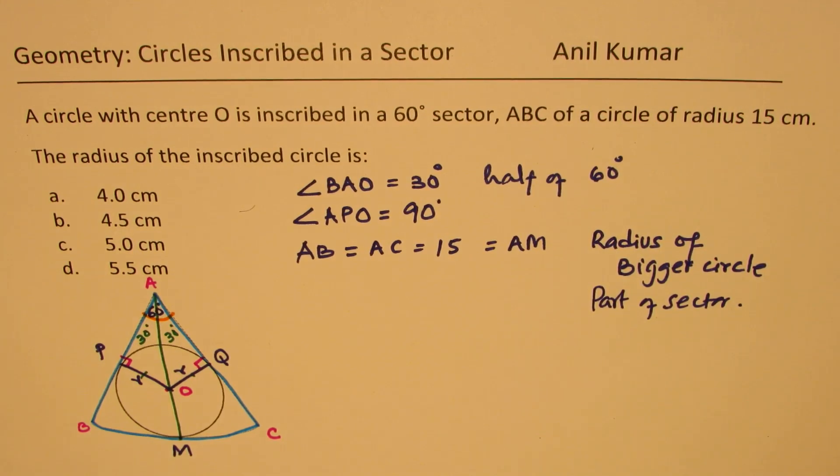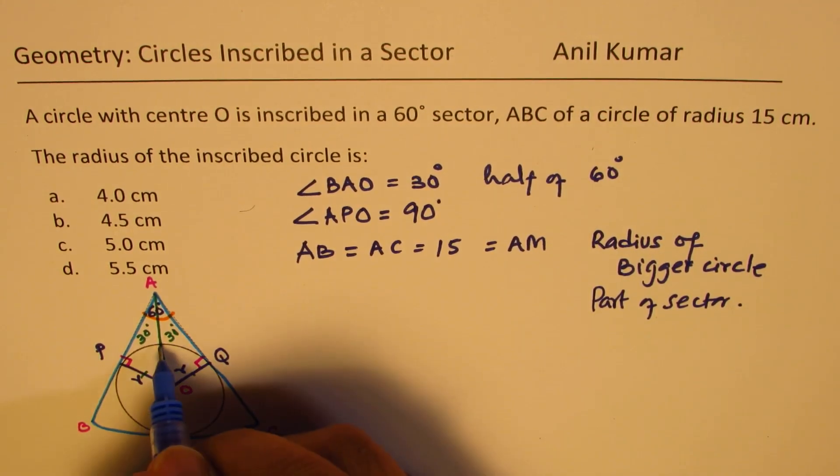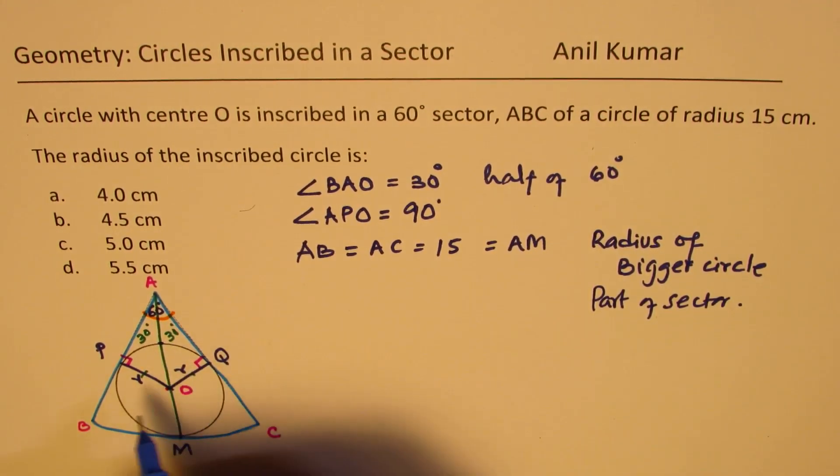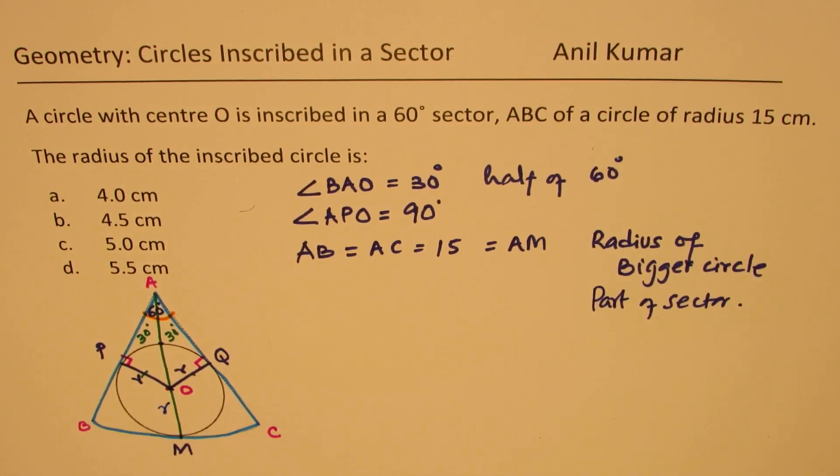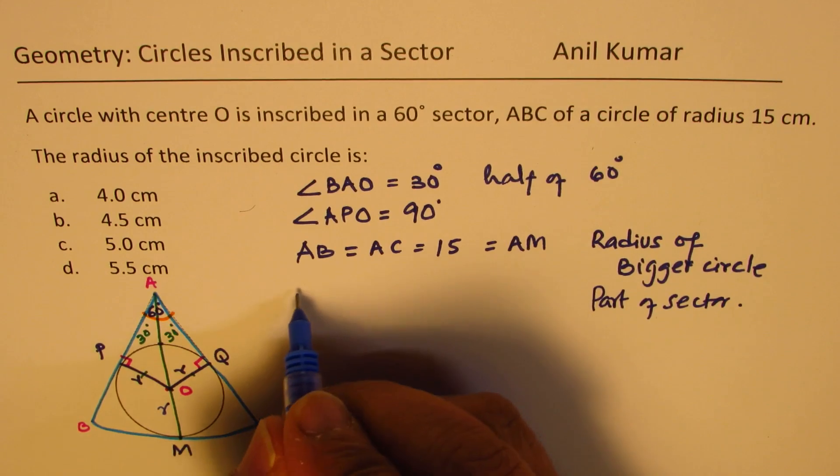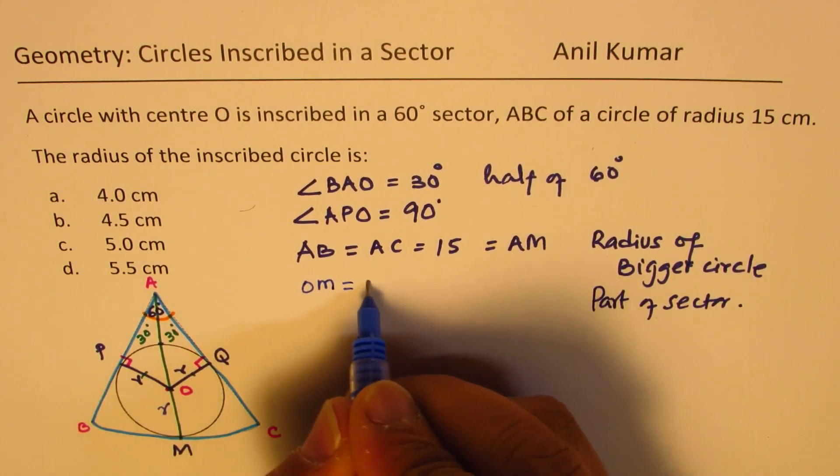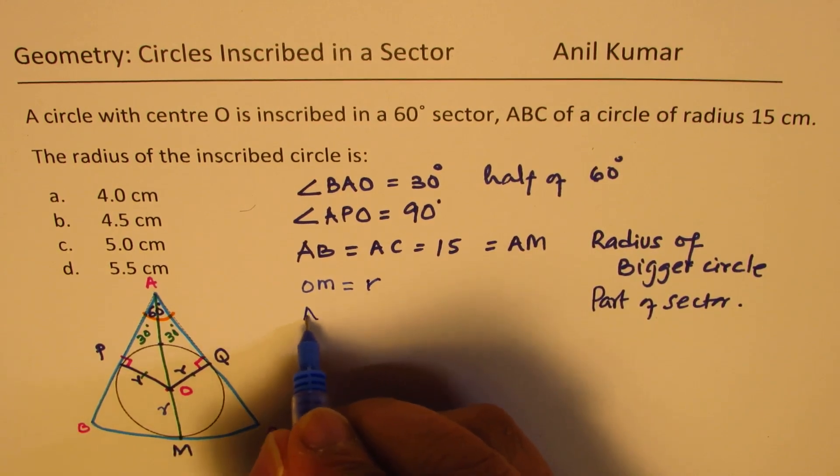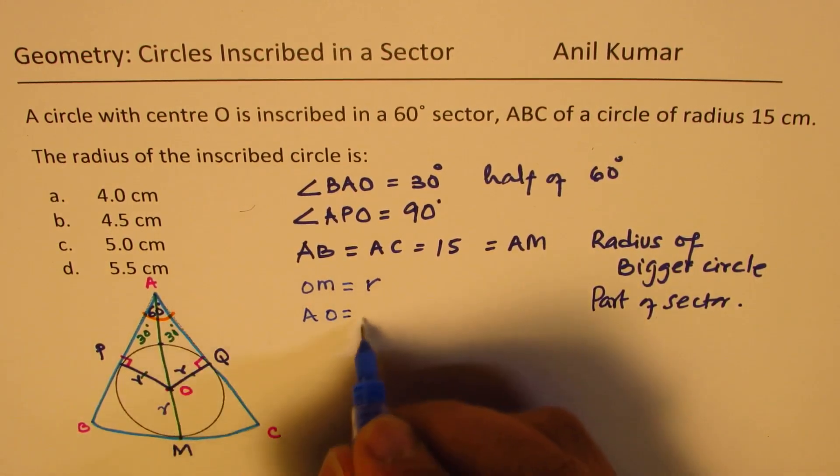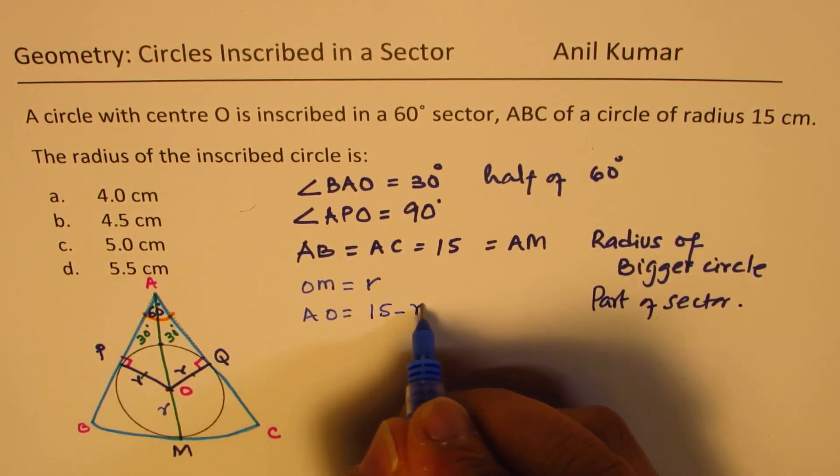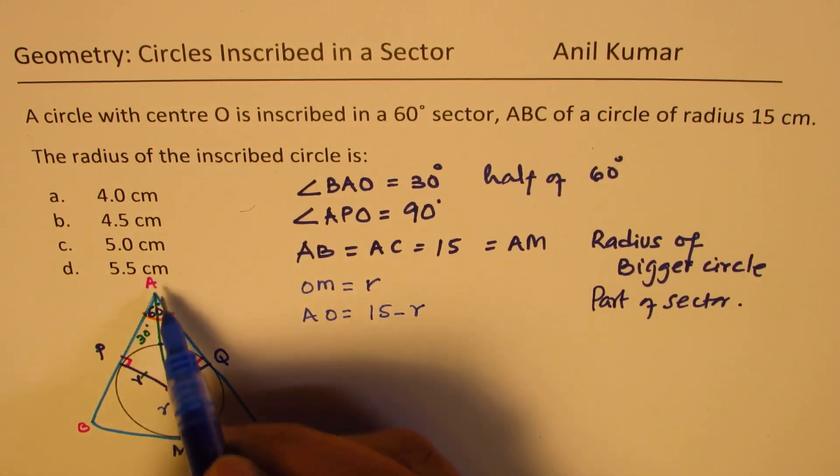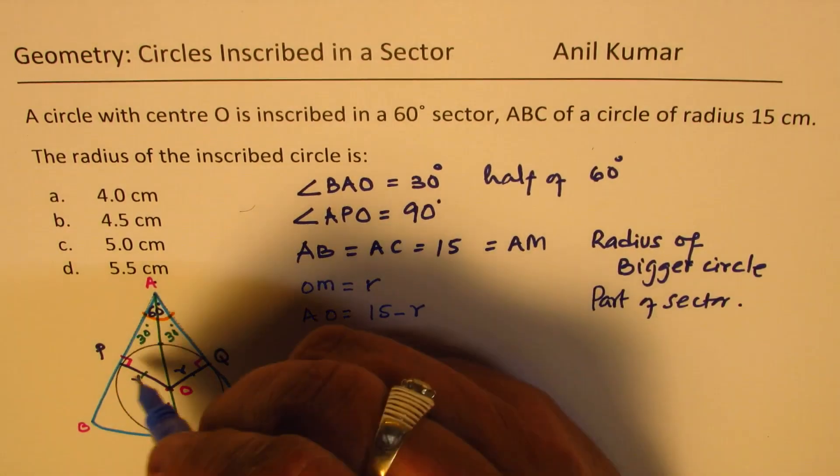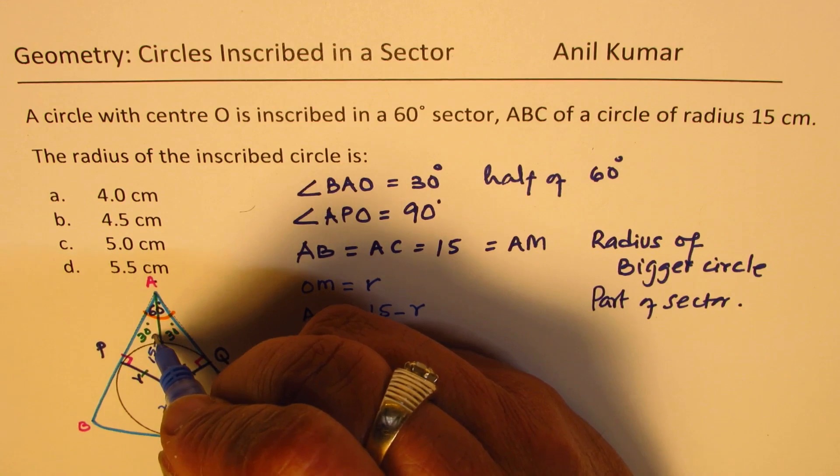Now, from the figure, you can see that the length O to M will be R. So O to M is the radius R. So A to O will be how much? It will be 15 minus R. So A to O is 15 minus R. Let me write 15 minus R here.